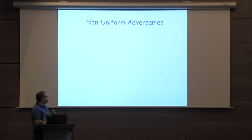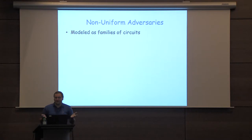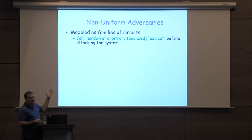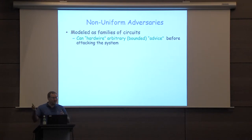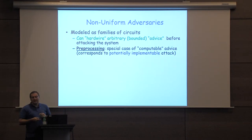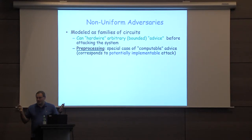Non-uniform adversaries are modeled as families of circuits. What comes implicitly with this modeling is that for every particular security parameter, you can hardwire for free a lot of information — such as collisions — changing the circuit from one security parameter to the next. This information in theory is called advice; in practice, it's called pre-processing. In practice, pre-processing can be viewed as a special case of this advice, which can be computed, hopefully feasibly for some setting of parameters — corresponding to a special case of potentially implementable attacks.